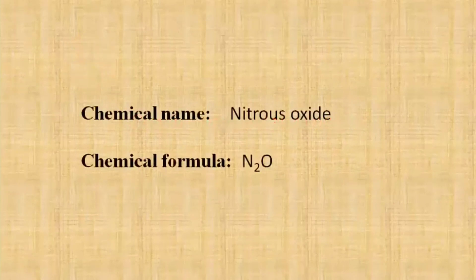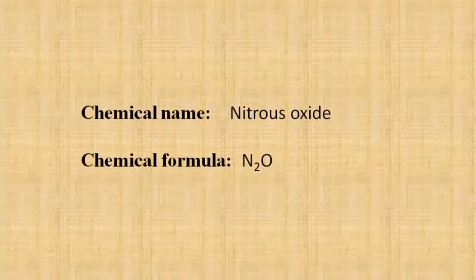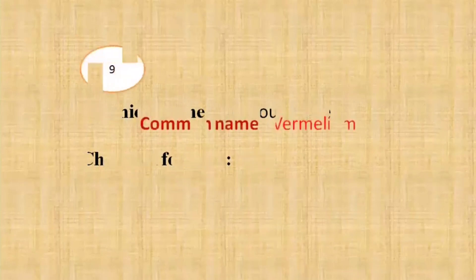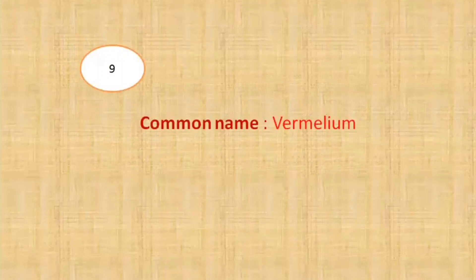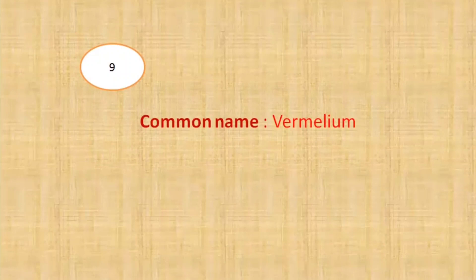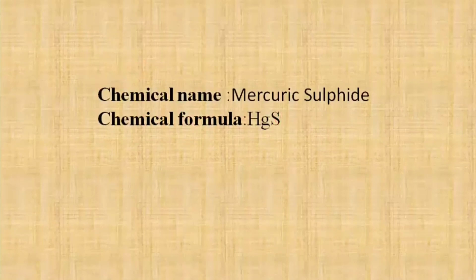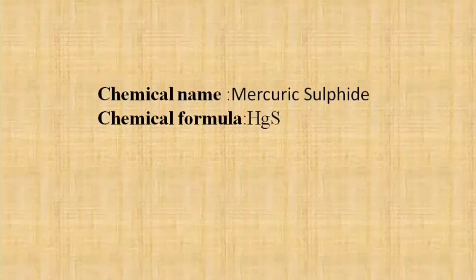What is the chemical name of laughing gas? The chemical name of laughing gas is nitrous oxide, N2O. Our next question is what is the chemical name of vermilion? The chemical name of vermilion is mercuric sulfide, that is HgS.